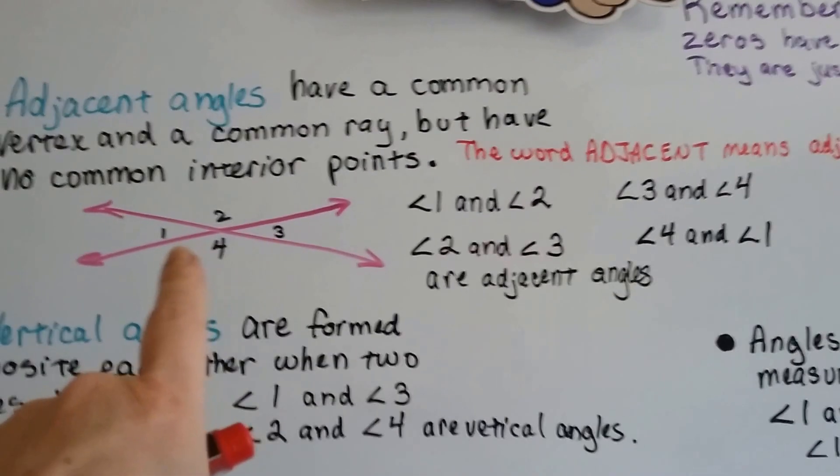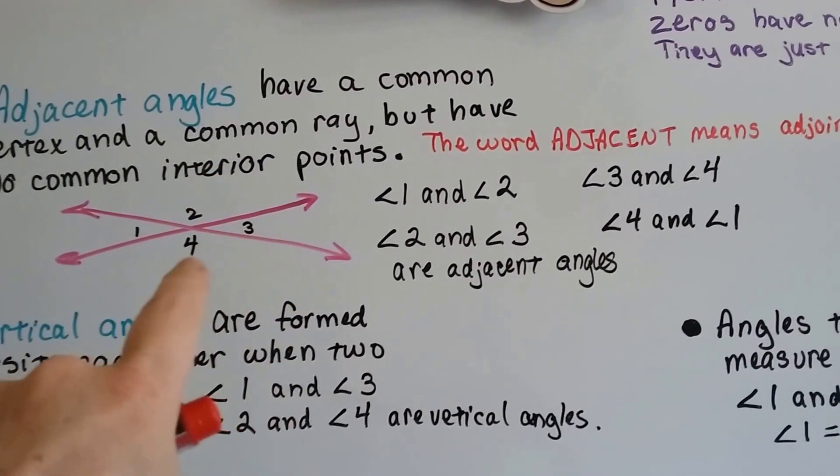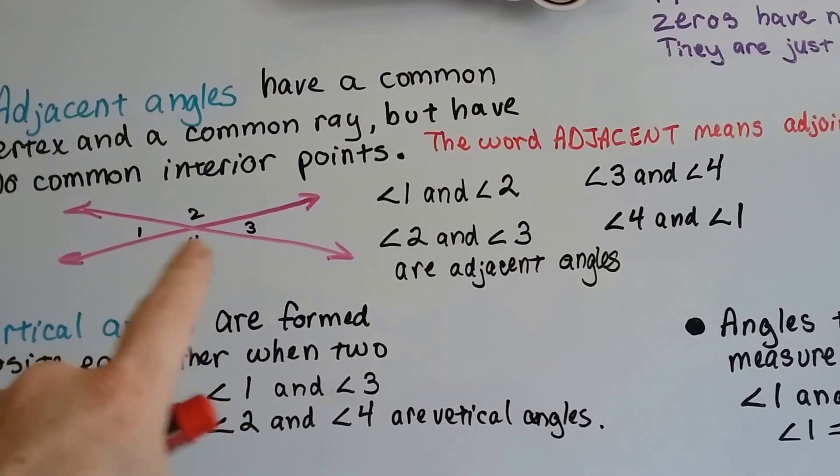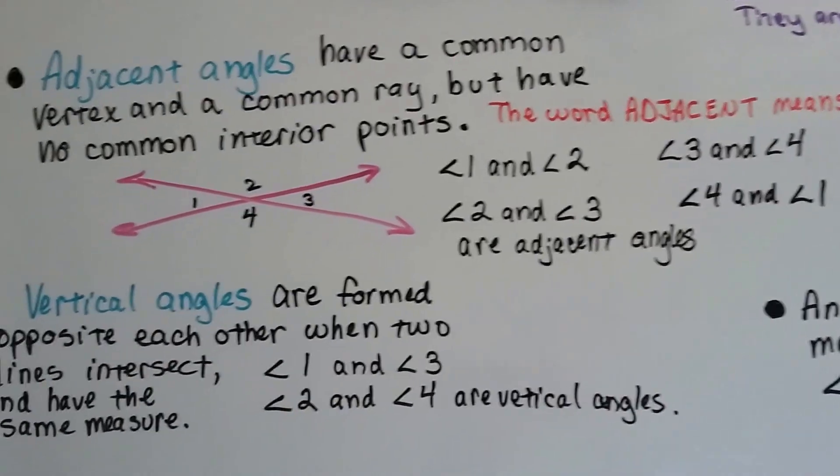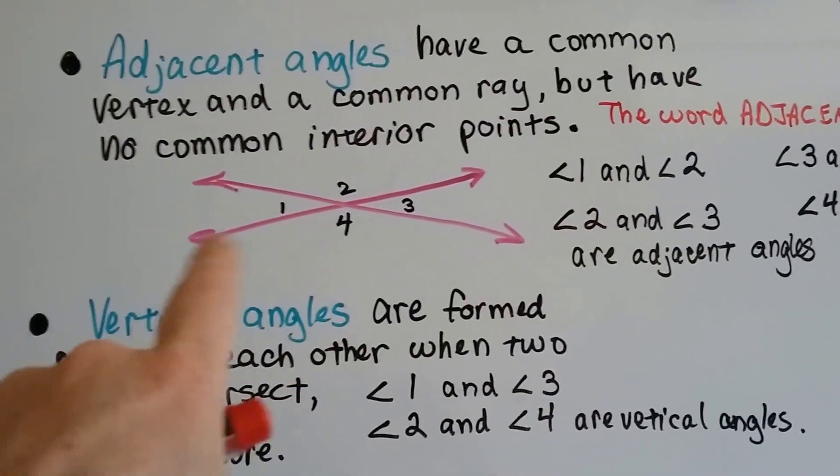The word adjacent means adjoining or neighboring. So if we look at this, angles 1 and 2 are adjacent, angles 2 and 3 are adjacent, angles 3 and 4 are adjacent, and angles 4 and 1 are adjacent. They're neighbors. And they share that common ray that's in between them.